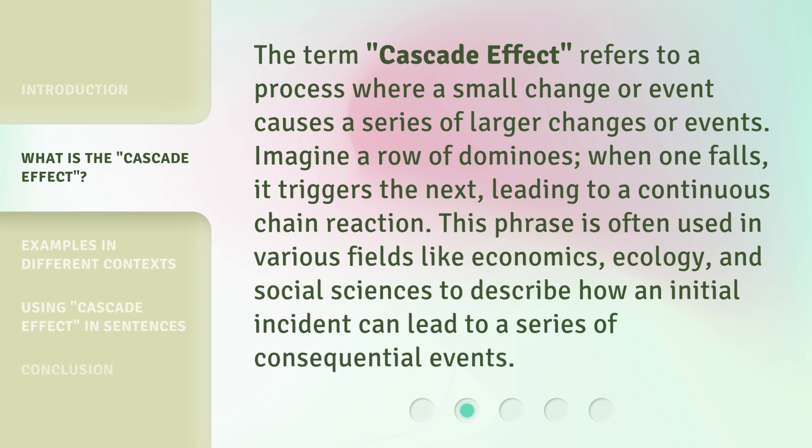The term 'cascade effect' refers to a process where a small change or event causes a series of larger changes or events. Imagine a row of dominoes — when one falls, it triggers the next, leading to a continuous chain reaction. This phrase is often used in various fields like economics, ecology, and social sciences to describe how an initial incident can lead to a series of consequential events.